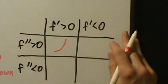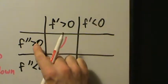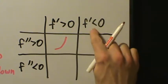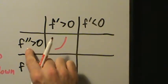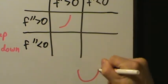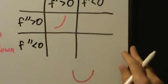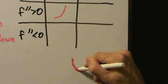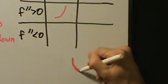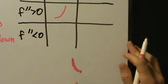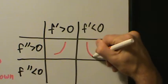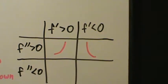What if f prime is negative but f double prime is still positive? Then the function is decreasing but still concave up. Concave up still looks like a bowl, but now we want the decreasing part — from the left side down to the bottom. So if you have a function that's decreasing and concave up, it looks roughly something like that piece.